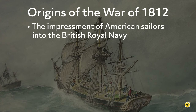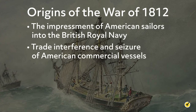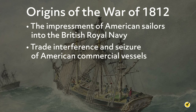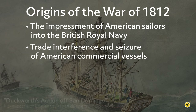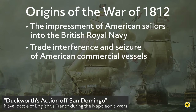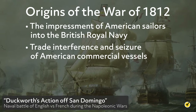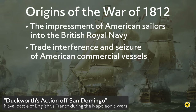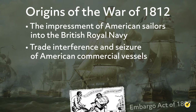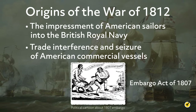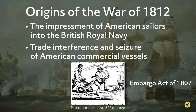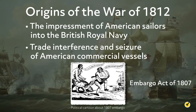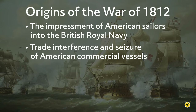It was not only the seizure of American sailors, but of American commercial vessels docked in Europe that led to war. American merchants were caught up in the lengthy commercial struggle between the British and French during the Napoleonic Wars. Hundreds of American ships were seized by France and Britain, as the Royal Navy blockaded much of Europe and Napoleon prohibited trade with Britain. The Embargo Act of 1807 was a response to the actions of both powers, blocking most foreign trade, but ultimately hurt the U.S. far more than Britain or France.